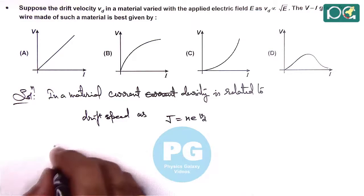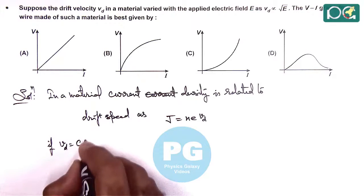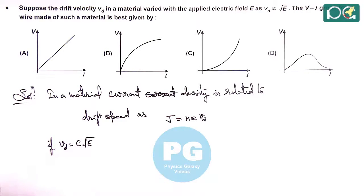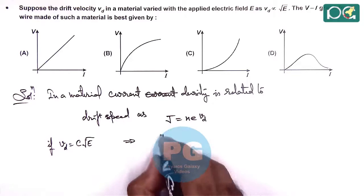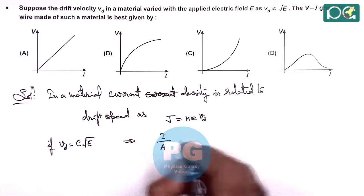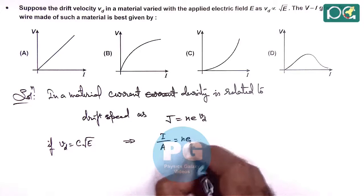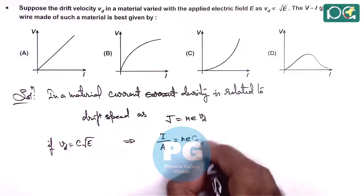And here, if Vd is given as some constant times root of electric field, then here we can write current density as current divided by cross sectional area equals nqVd, we can write C root E.